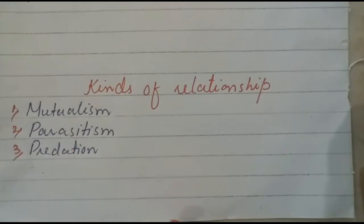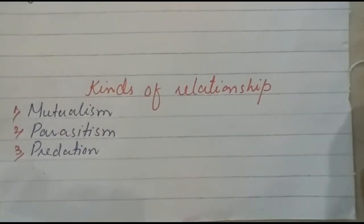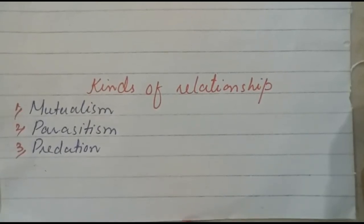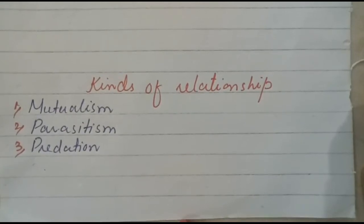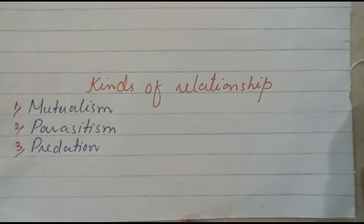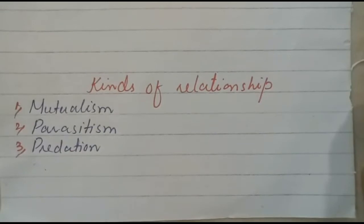Parasitism means one organism benefits and the other is harmed. The benefiting organism is the parasite, and the harmed one is the host. For example, bacteria that infect our body are parasites — our body is the host. It is beneficial for the bacteria but causes disease in us. This is parasitism.